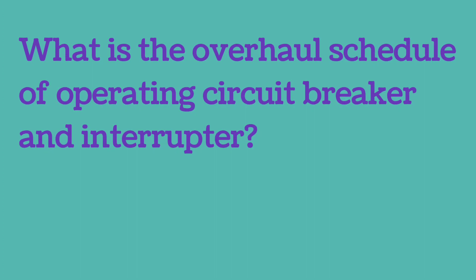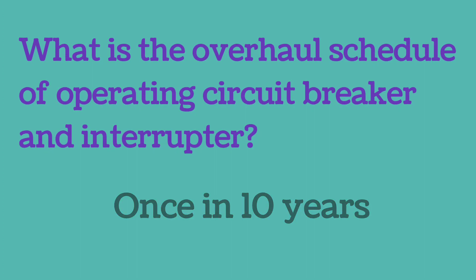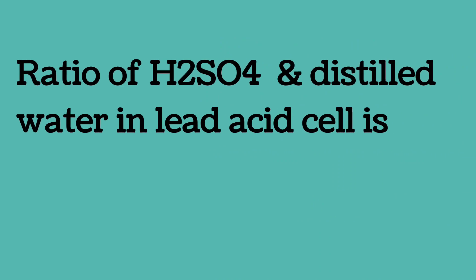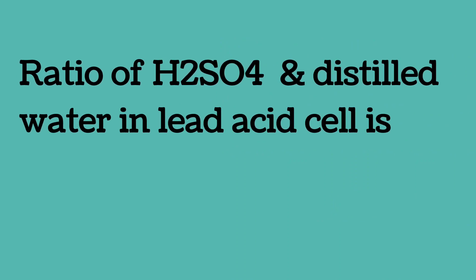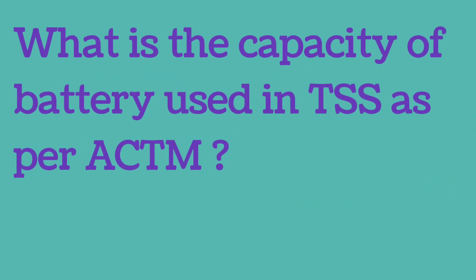The overall schedule for operating a circuit breaker and its interpreter is once in 10 years. The ratio of H2SO4 and distilled water in a lead acid cell is 1:4.